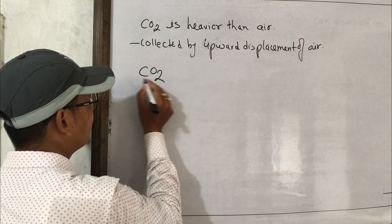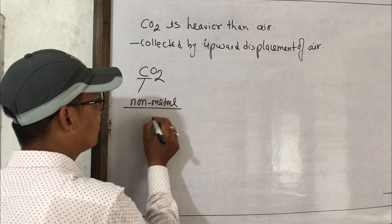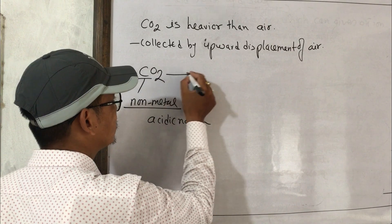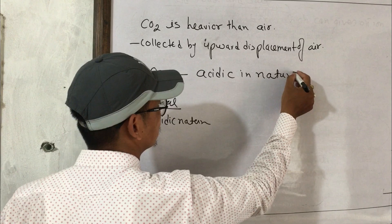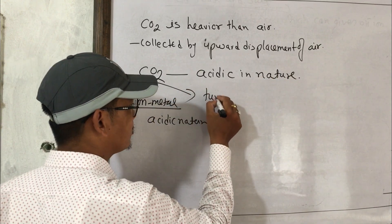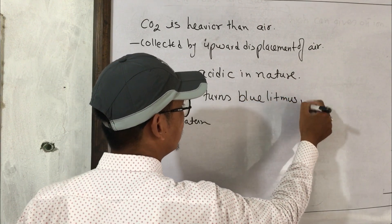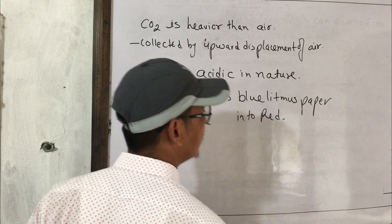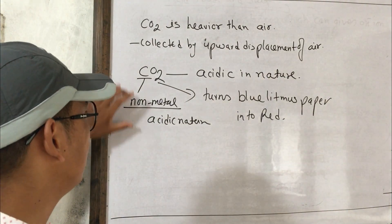Carbon dioxide is a non-metal oxide, and non-metal oxides are acidic in nature. CO₂ is acidic in nature. It can turn blue litmus paper into red, indicating its acidic character.